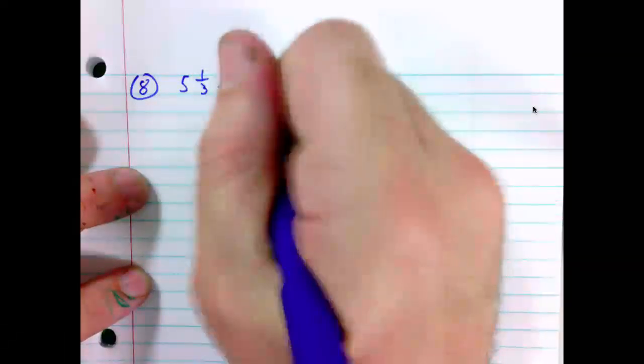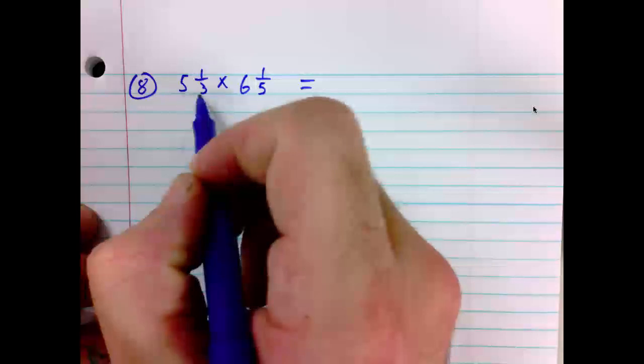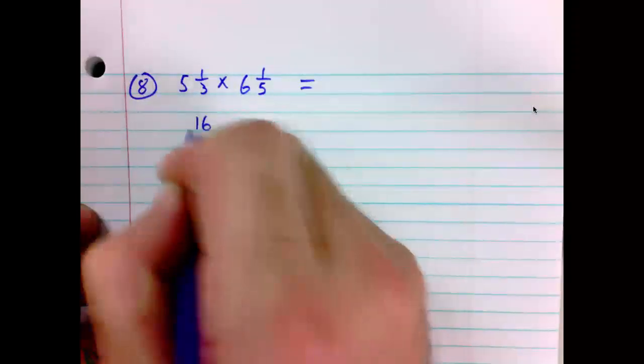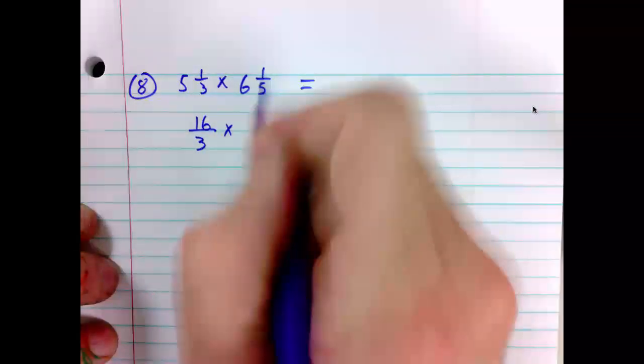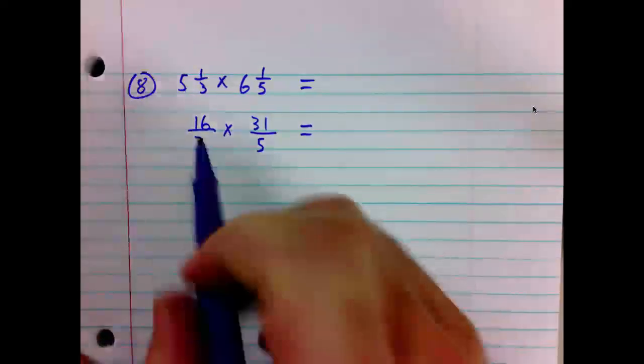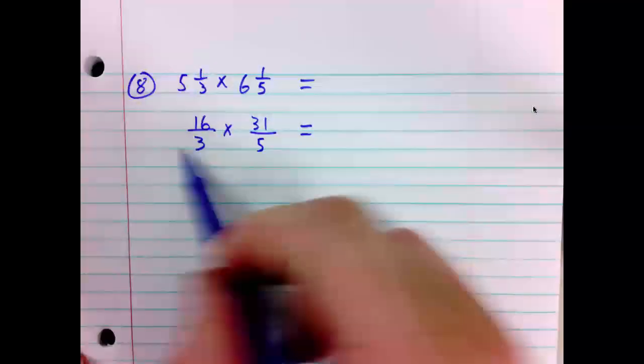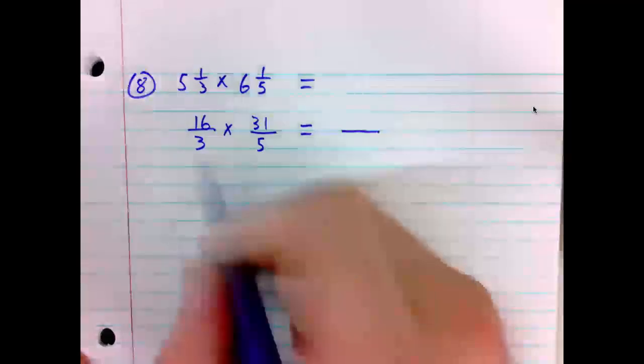Number 8 says 5 and 1 third times 6 and 1 fifth. Again, convert the mixed number to improper fraction. 5 times 3 is 15 and 1 is 16. 16 over 3 times 6 times 5 is 30 and 1 is 31. 31 over 5. Consider, will any numerator cancel with any denominator? Unfortunately, we have no common factors. So we can multiply straight across. 3 times 5 is 15.